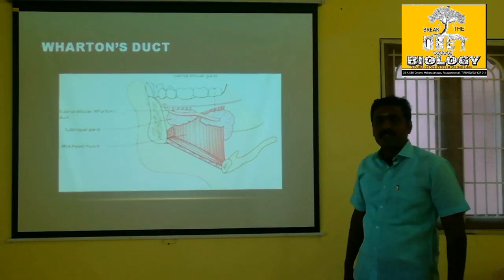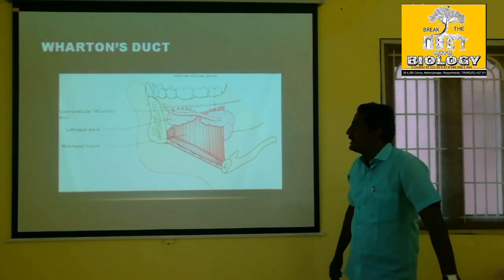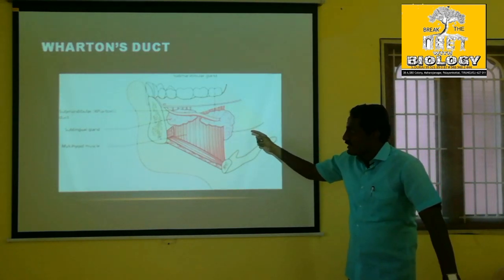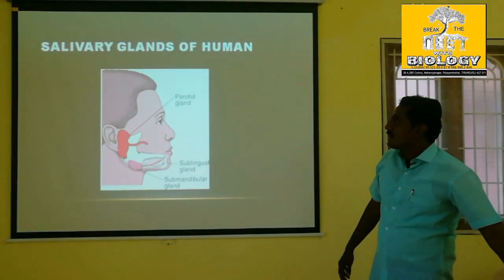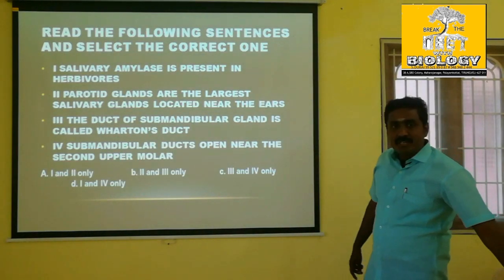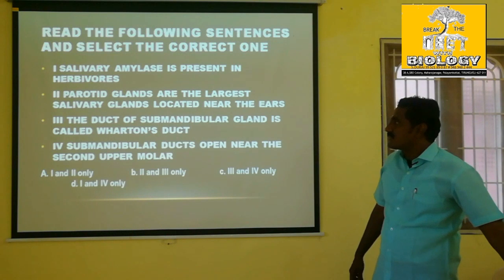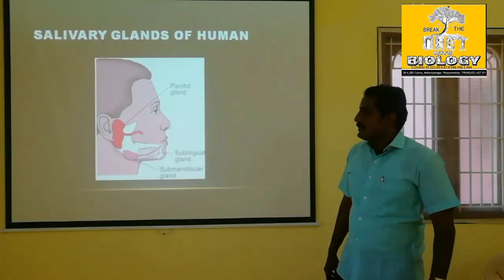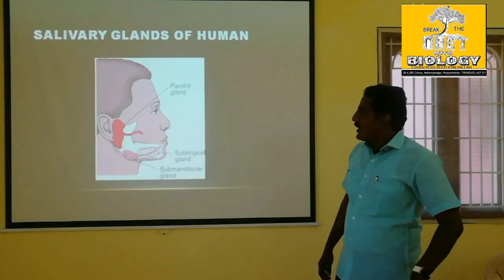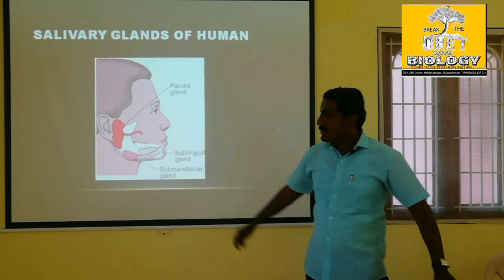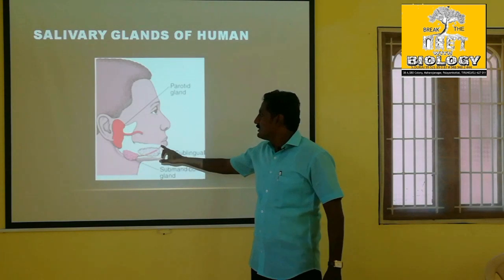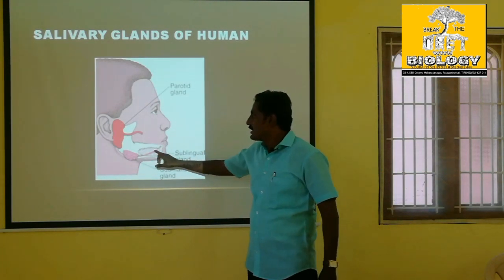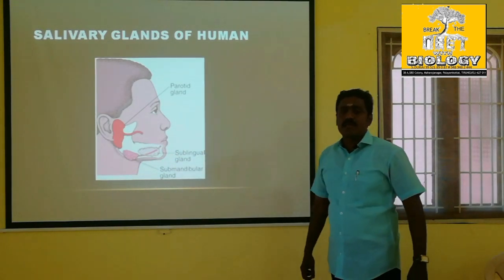The submandibular gland — in the case of Wharton's duct — is the potential for this statement. The duct of the submandibular gland is called Wharton's duct. We find this in the diagram — submandibular gland is called Wharton's duct.